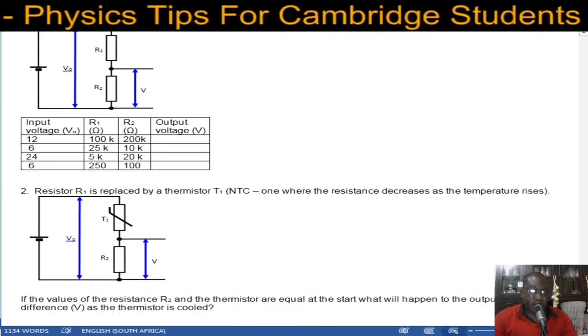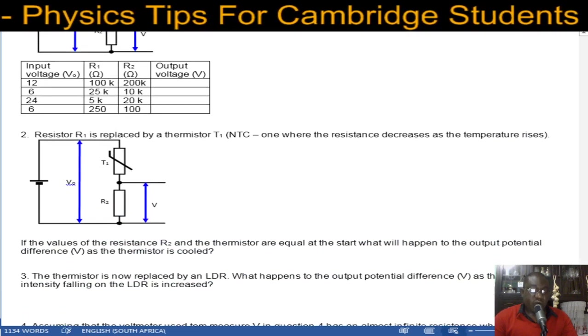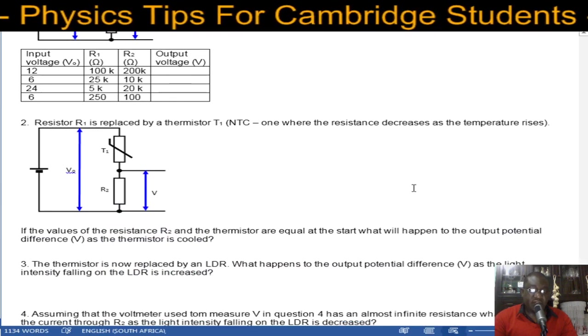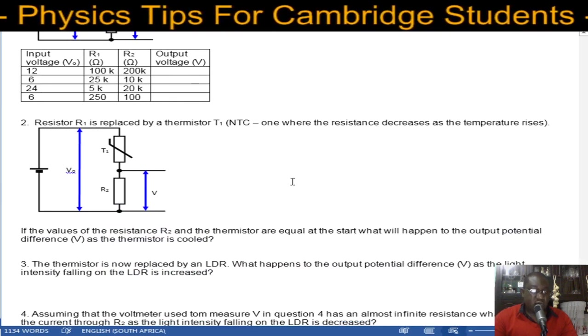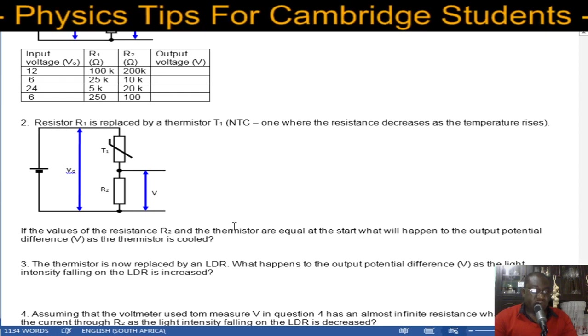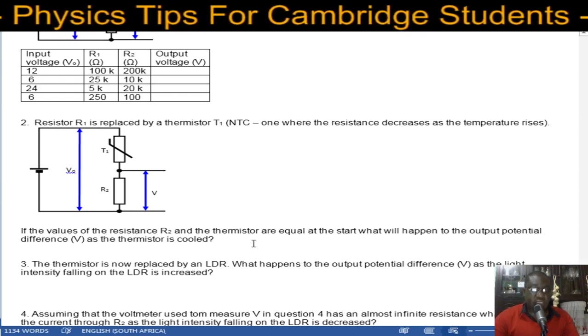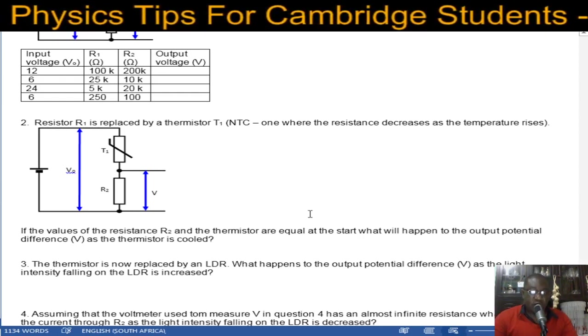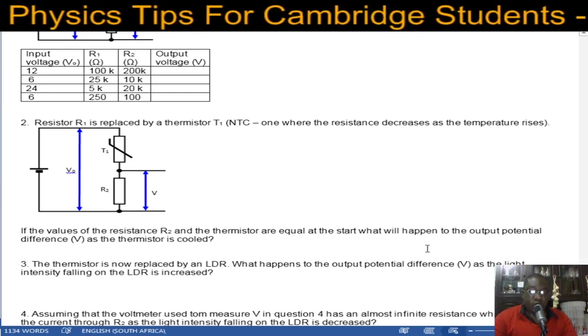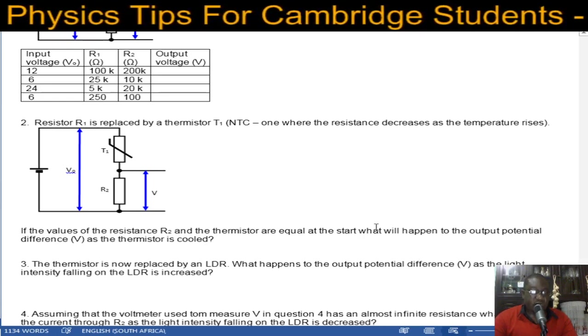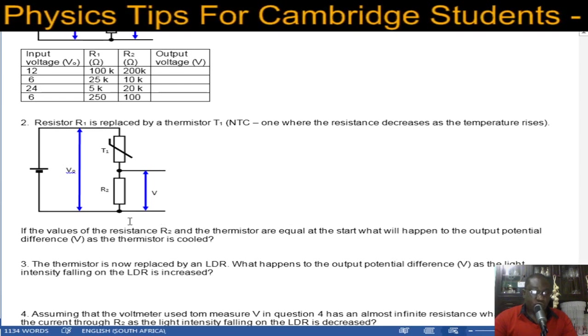Next question. Resistor R1 is replaced by a negative temperature coefficient thermistor. If the values of the resistance R2 and the thermistor are equal at start, what will happen to the output potential difference as the thermistor is cooled?